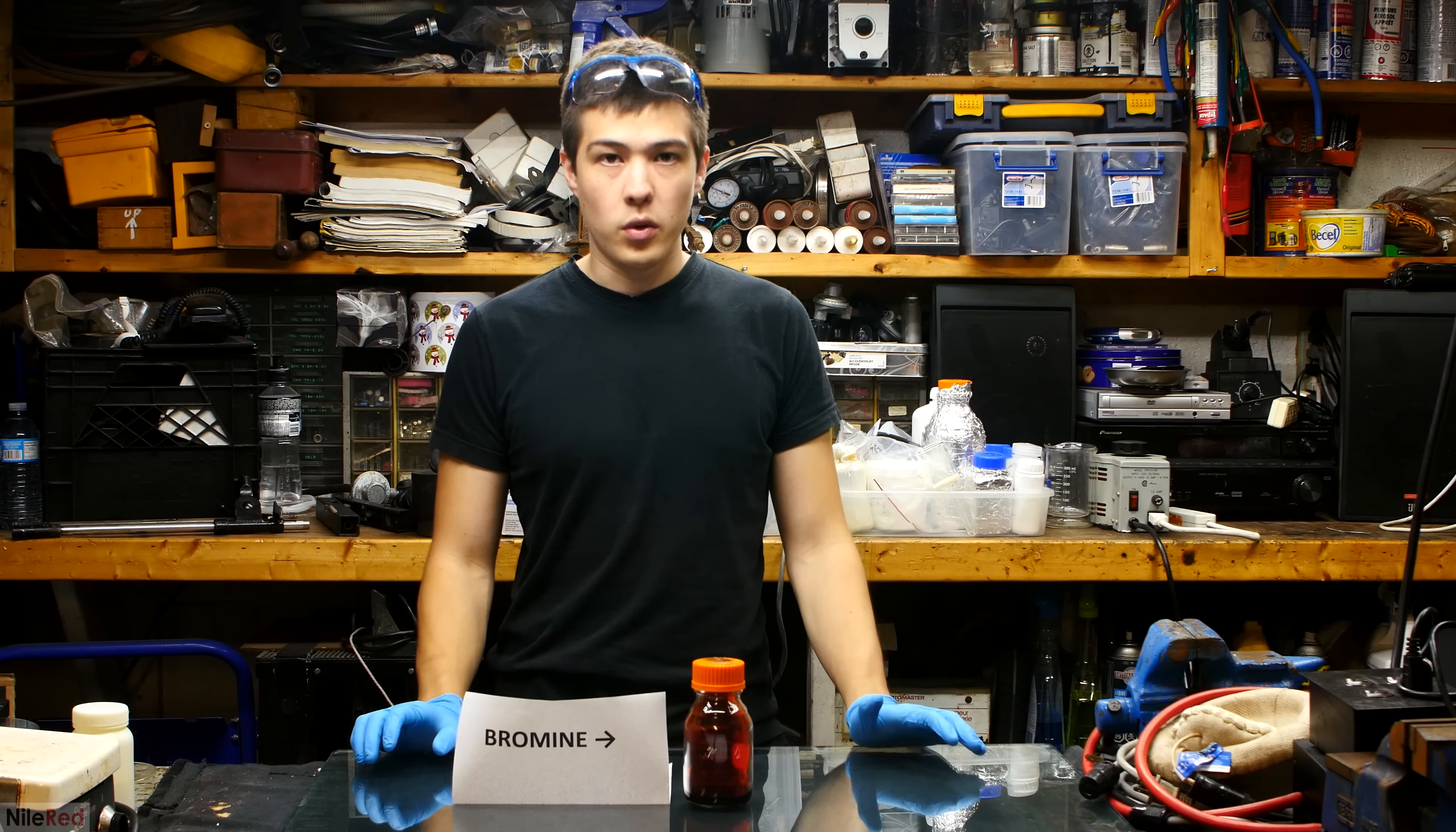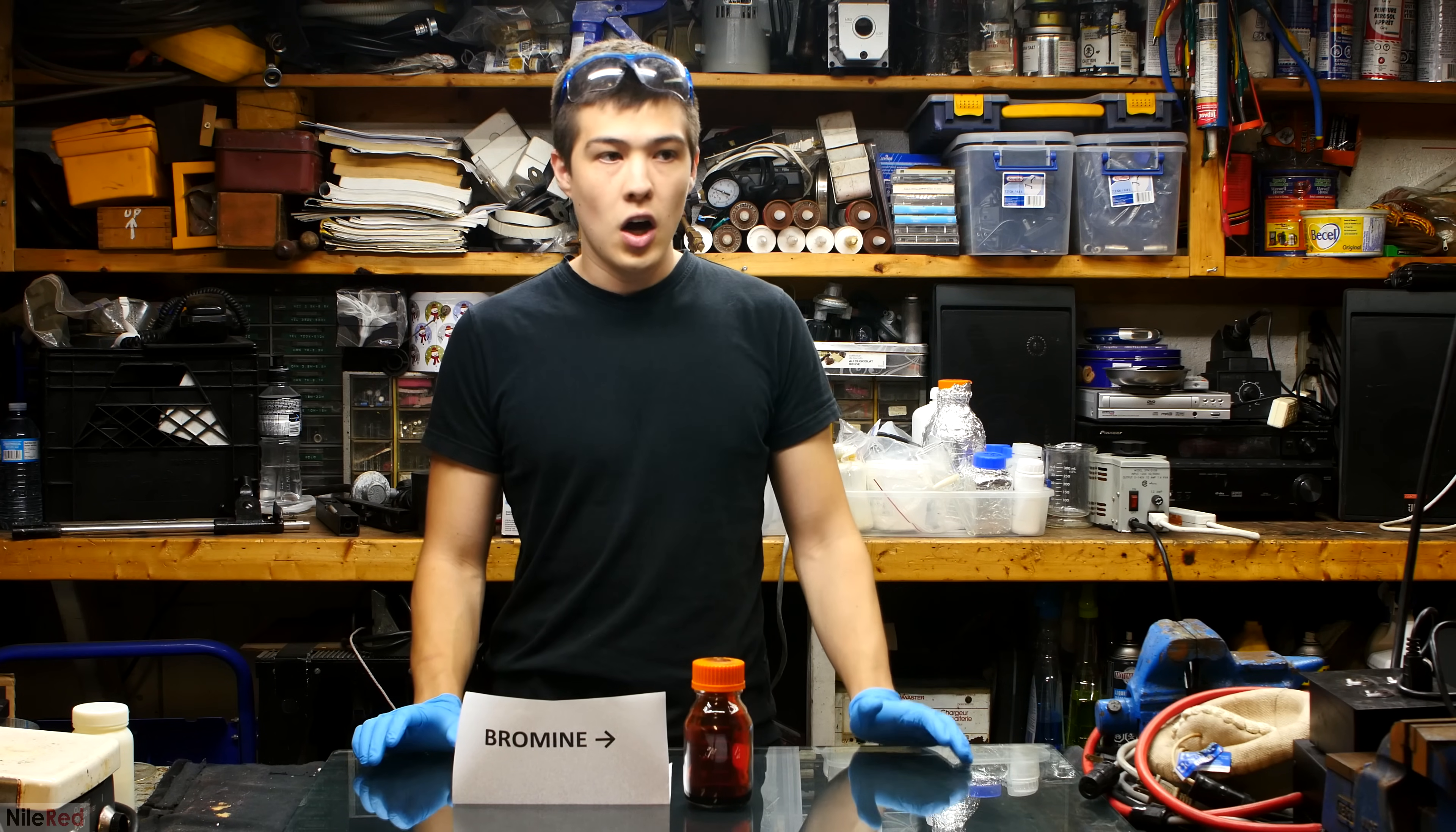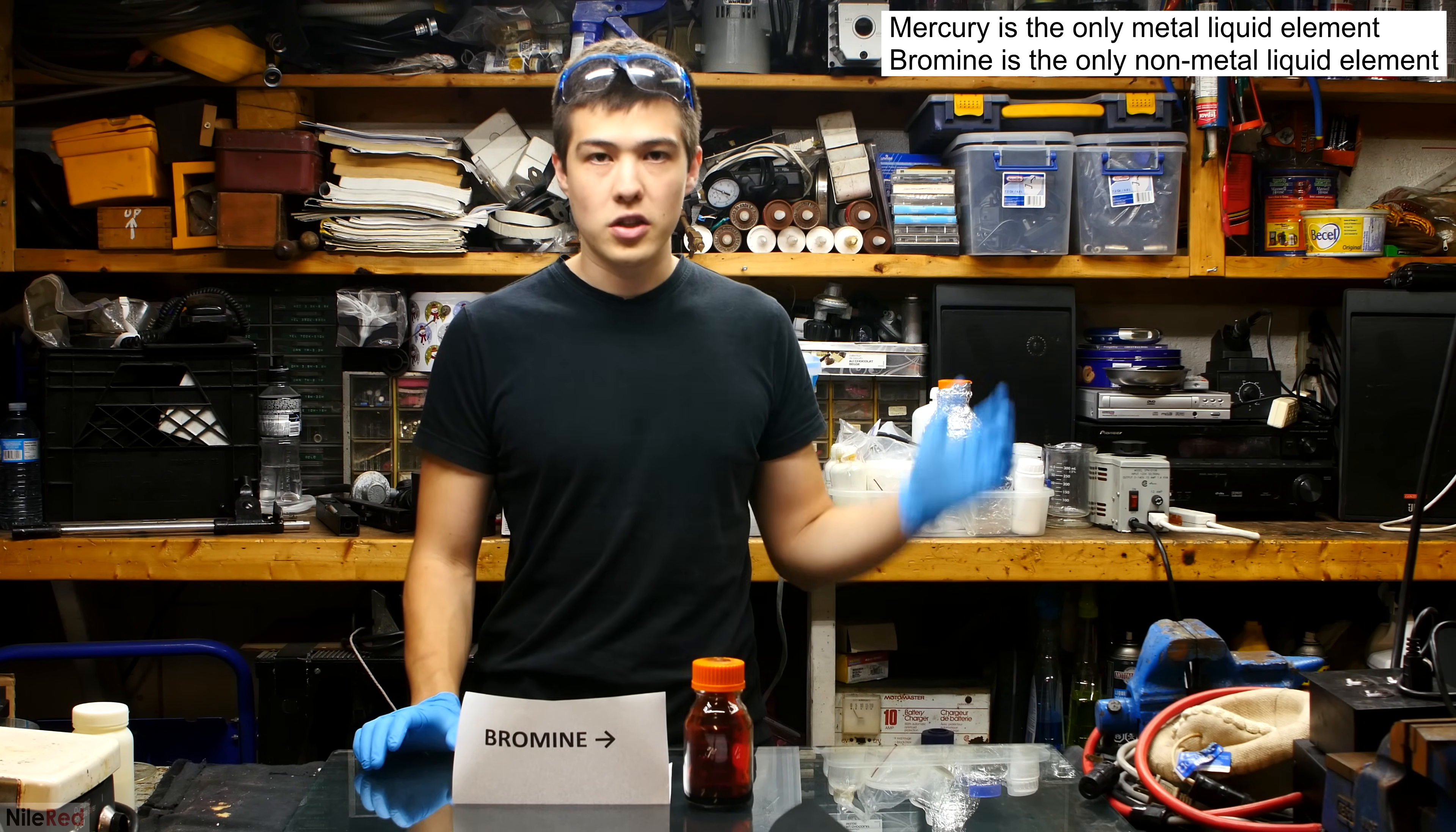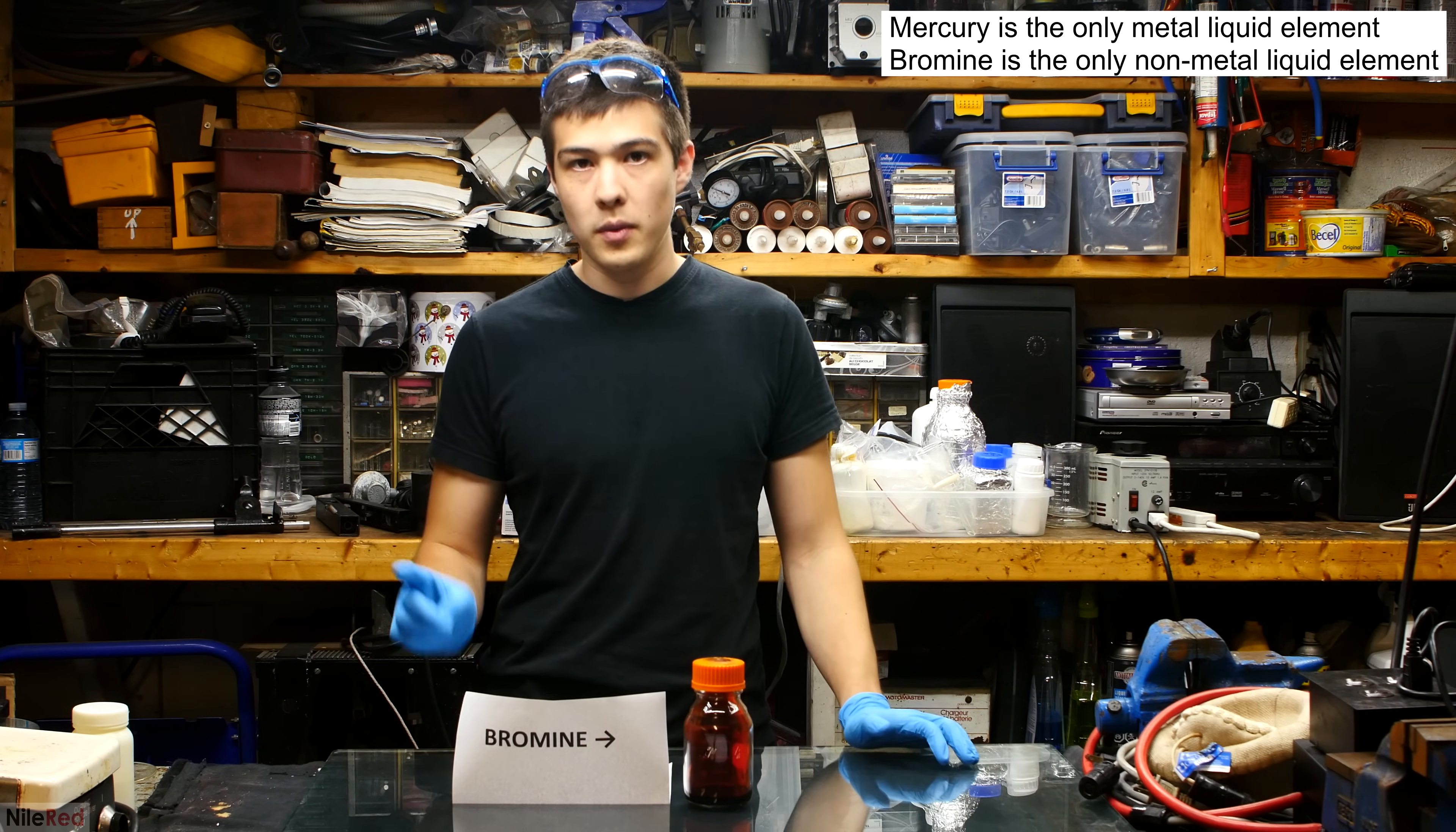The fact that bromine exists as a liquid at room temperature is pretty unique because mercury is the only other element like this. All of the other ones like iron, chlorine, fluorine that I've already mentioned are all gases or solid at room temperature. We only have two: mercury and bromine that are liquid.